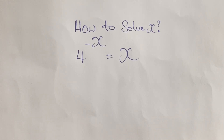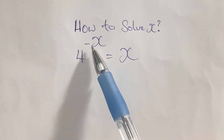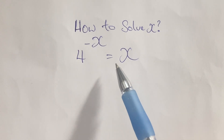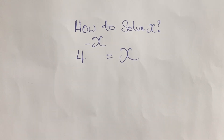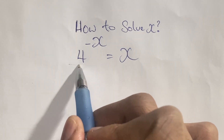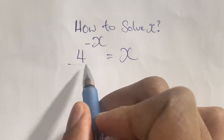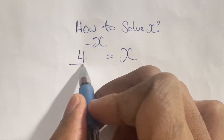Greetings again everyone, welcome back to my channel. Here we have another algebraic exponential equation that we're going to solve. In this equation we're going to find x, where we have 4 to the power of negative x is equal to x.